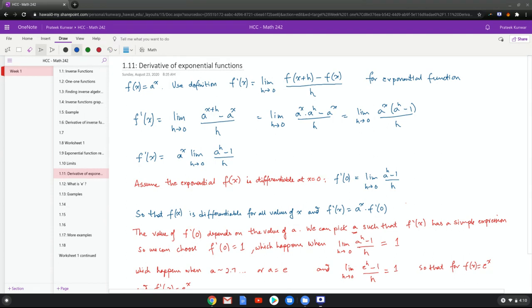I can factor out an a to the x, and I'm left with a to the h minus one over h. Now because a to the x does not depend on h, I can pull that out of the limit to get that the derivative is a to the x limit h goes to zero, a to the h minus one over h.